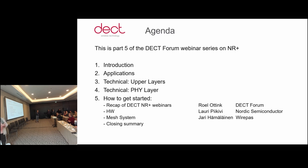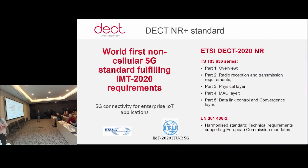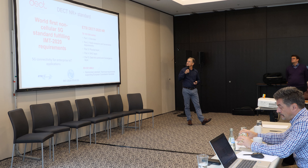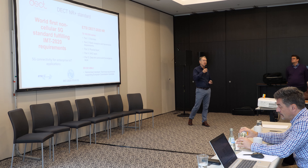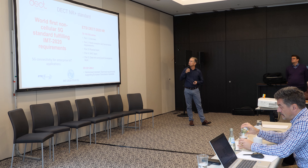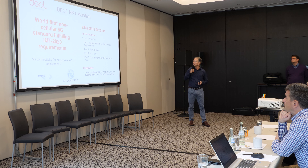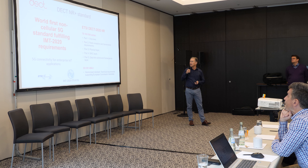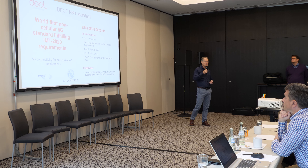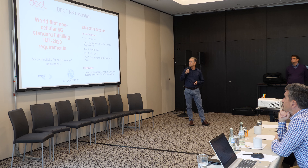Today we'll talk about how to get started with general availability. Just to recap, DECT NR+ is the world's first non-cellular 5G standard, fulfilling the IMT 2020 requirements. The standard is developed and owned by ETSI in the TS103636 series, which is ready and available. The essential technical requirements are captured in the harmonized standard, which is also available — that's the EN 3014062.